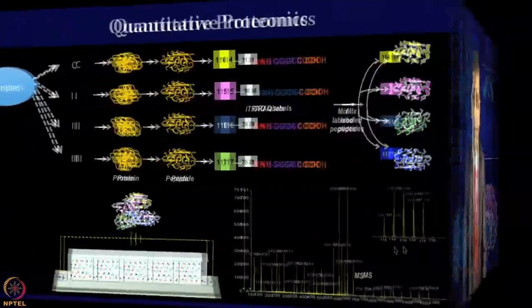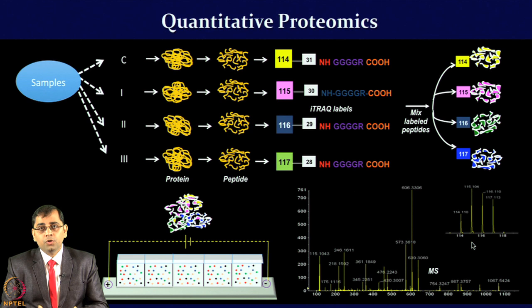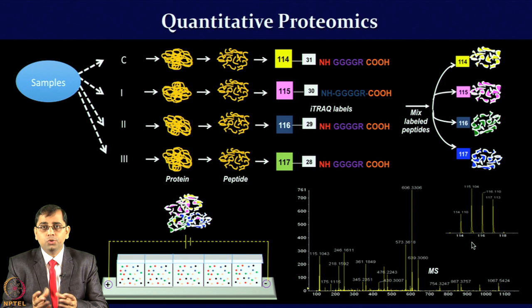But what if you want to quantify proteins using shotgun approaches — separating them directly in the mass spectrometer and also looking at expression changes? Therefore, quantitative proteomics using mass spectrometers has become a very attractive way of proteome analysis, where proteins are digested into peptide forms and different types of tags are used to label peptides on the N-terminal sequence, utilizing reporter ions for quantitative proteomics.